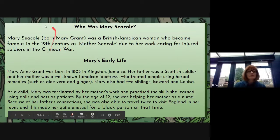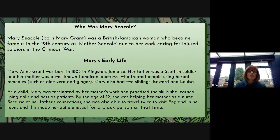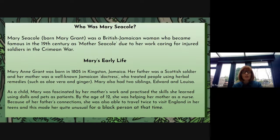So our introduction is here. Mary Seacole, born Mary Grant — that was her maiden name before she married; Seacole was her married name — was a British Jamaican woman who became famous in the 19th century as Mother Seacole, due to her work caring for injured soldiers in the Crimean War. So that opening paragraph tells you who she was and why she is remembered.